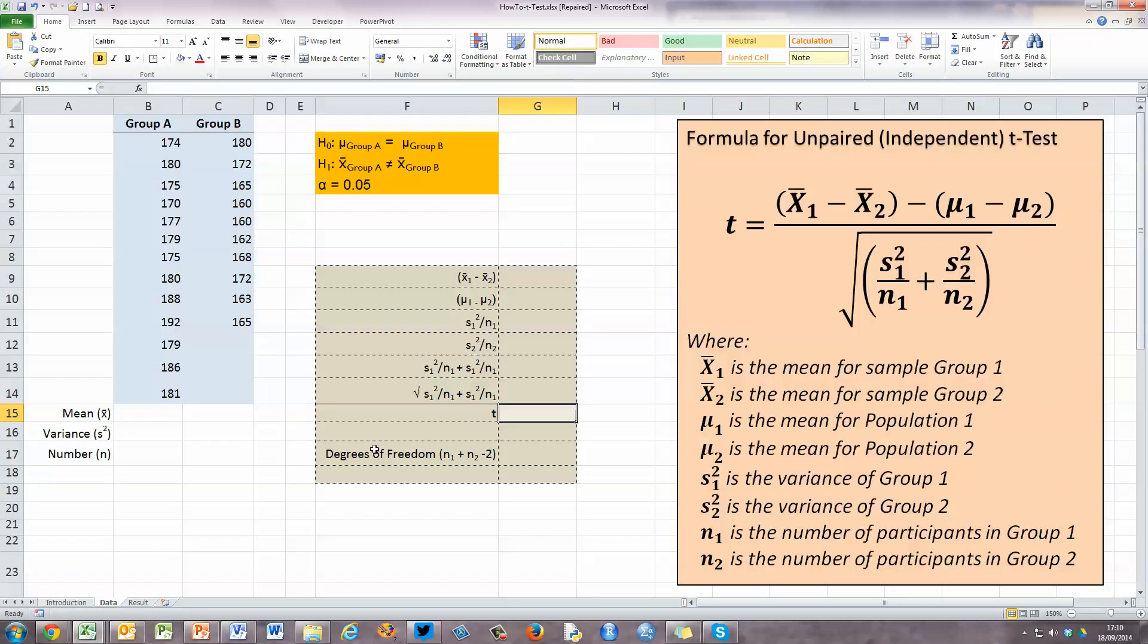So before we start, let's look at the formula we use for unpaired or independent t-test samples. We can see it looks like it's quite a mouthful over here on the right-hand side. Our t-value is equal to all of these other individual values that we need to calculate. But when we look through these values, we can see that they're relatively straightforward. X̄₁ is the mean for sample group 1, X̄₂ is the mean for sample group 2, μ₁ is the mean for population 1, and μ₂ is the mean for population of group 2.